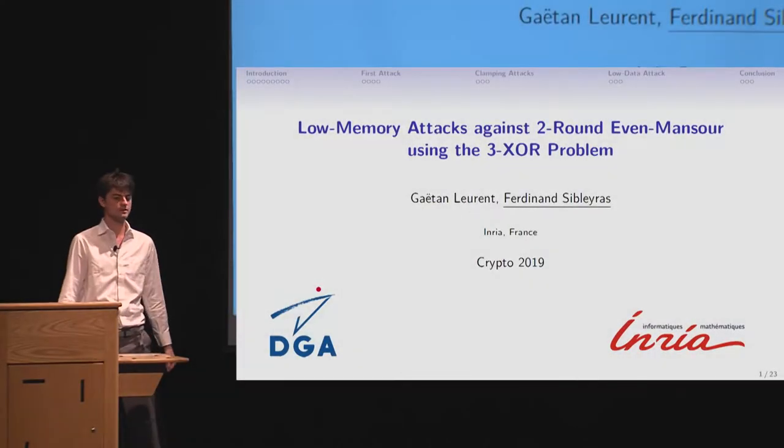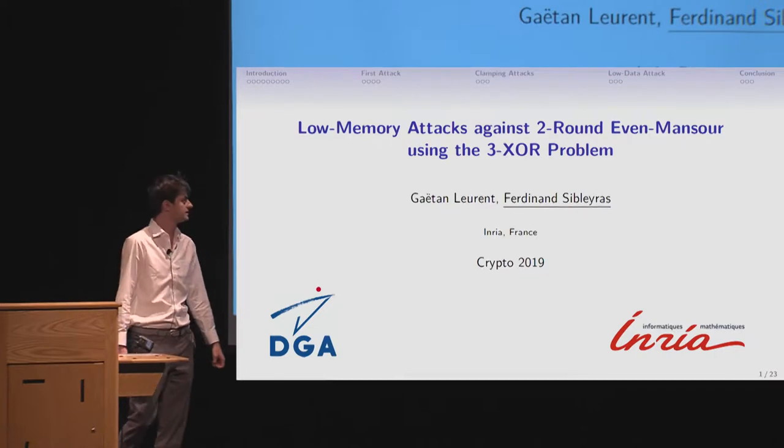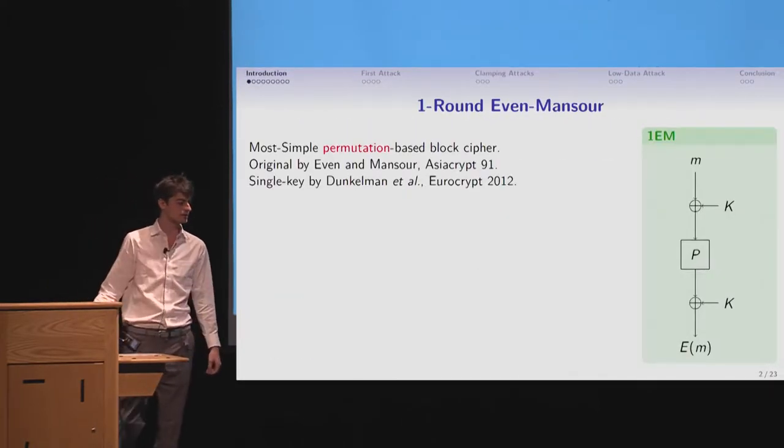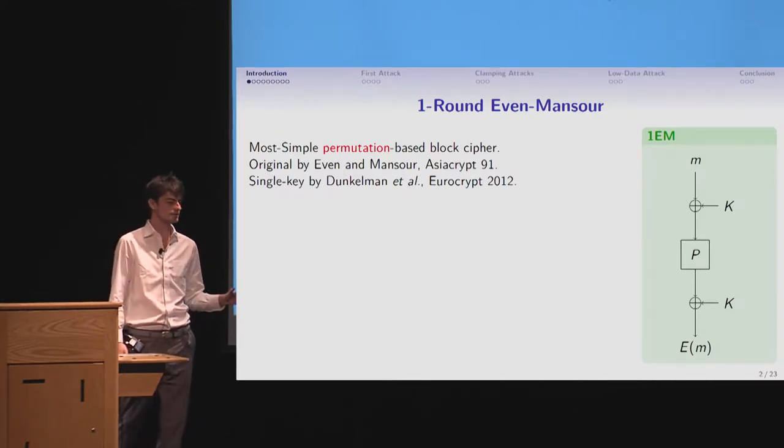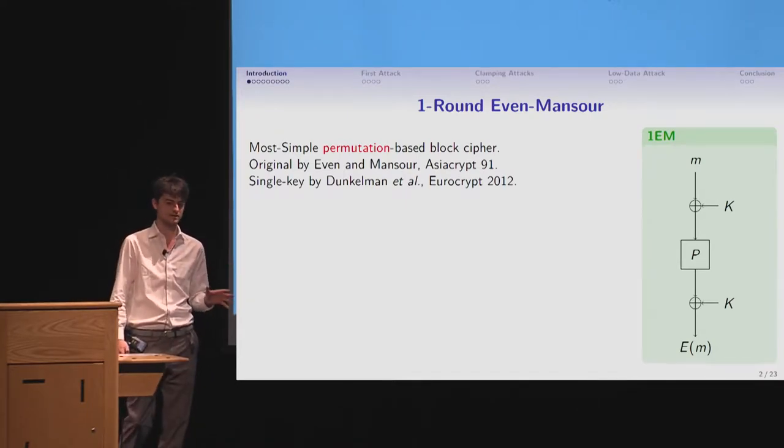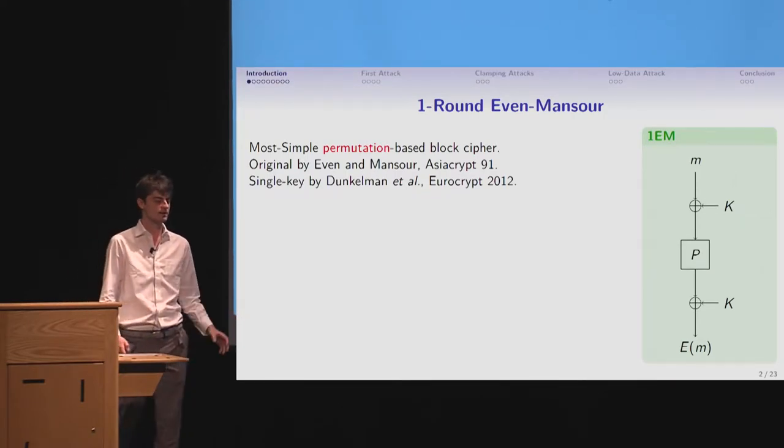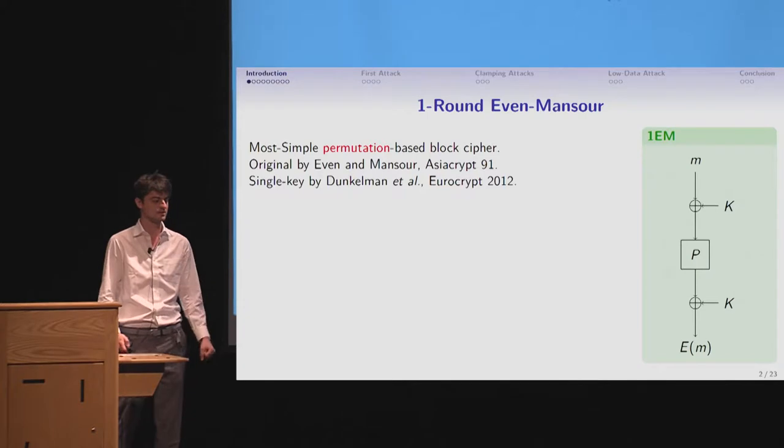In this talk, we're going to do a cryptanalysis of two-round Even-Mansour using new techniques. So first, what is Even-Mansour? Even-Mansour aims to be the most simple permutation-based block cipher. It's been introduced by Even and Mansour in 1991. And now we'll focus on the single key version by Dunkelman et al. in 2012.